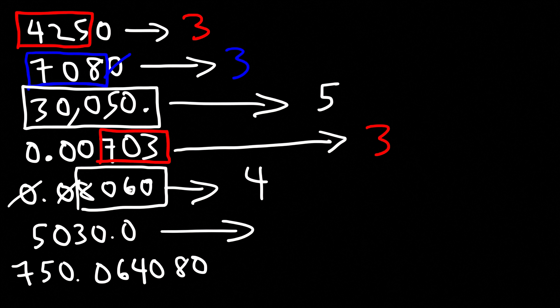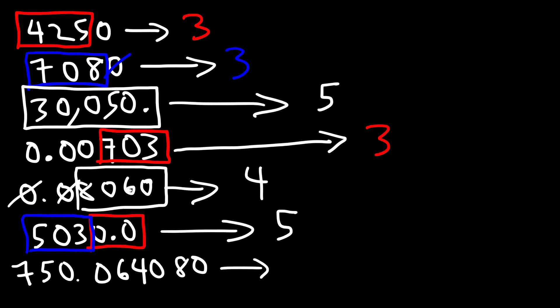For 5030.0, we have a decimal point, so all trailing zeros will be counted. The zero between the three and five is always counted. So we have a total of five significant figures.